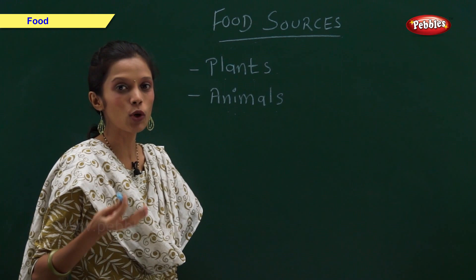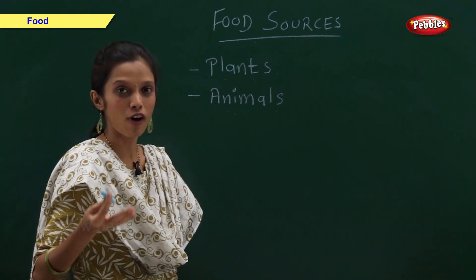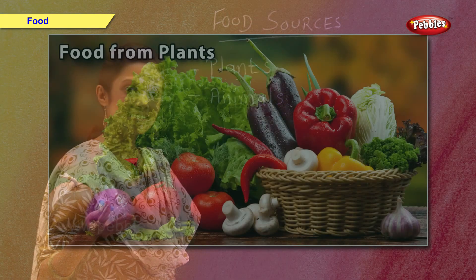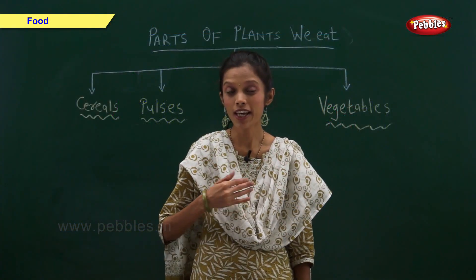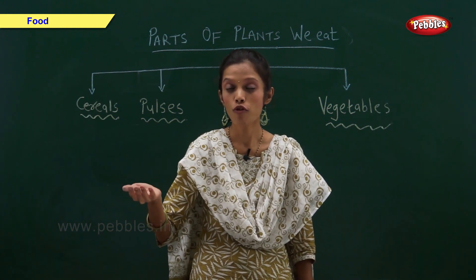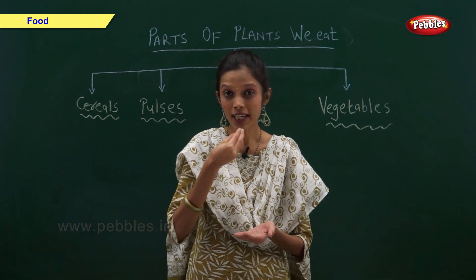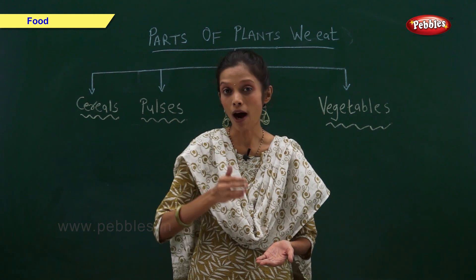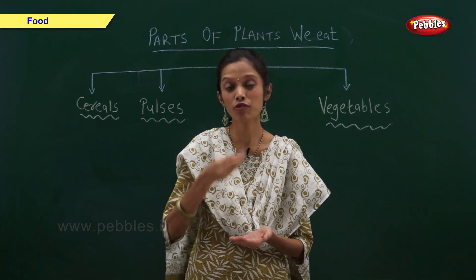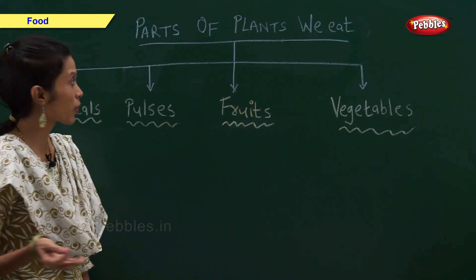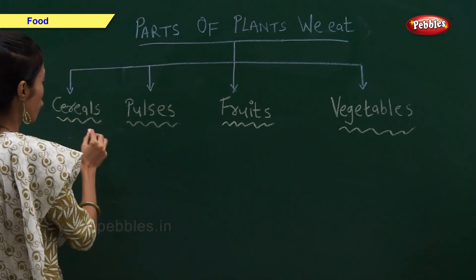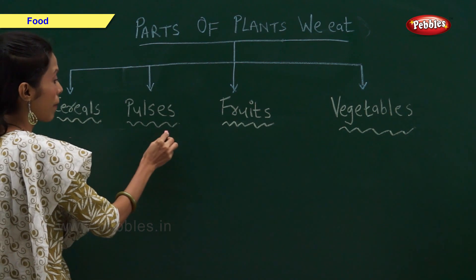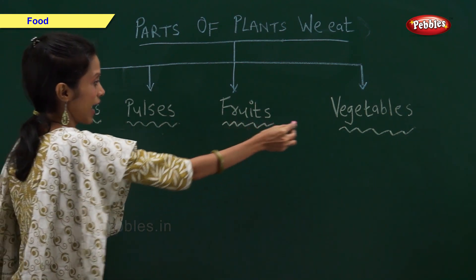Now, let us have a look at them one by one in detail. We get many kinds of food from plants. We eat plants or a part of plants as food. Now, let us look at the parts of plants that we eat. We eat cereals, pulses, fruits, and vegetables.